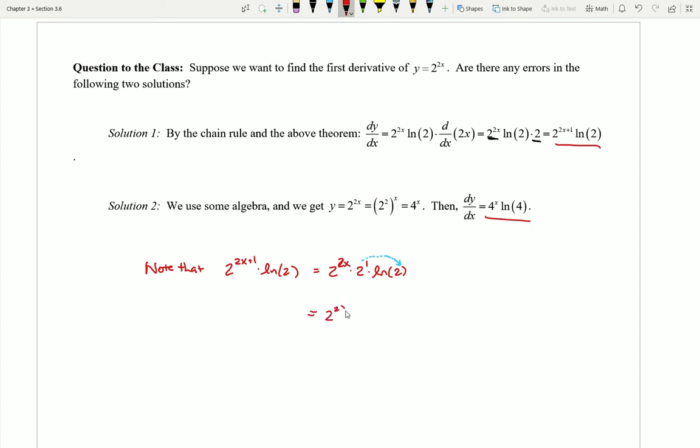I can write this again as 2 to the 2 to the x and here natural log 2 to the 2. So this is going to be 4 to the x times natural log of 4. So these things here are actually the same.